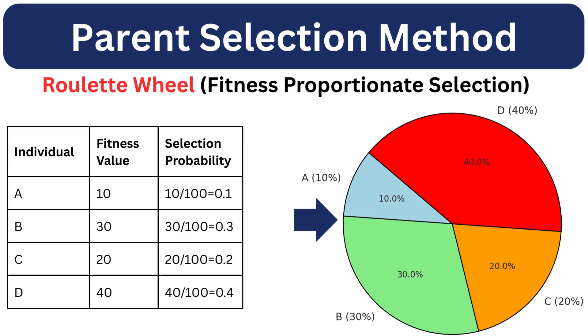Once we evaluate the fitness, the next question is which individuals get to become parents. This is called parent selection and it determines how solutions are chosen to pass on their genes. First up, the classic roulette wheel selection. Here individuals are selected proportionally to their fitness. It's like spinning a wheel where fitter individuals get larger slices. Here we have 4 individuals each with their fitness value. To calculate the selection probability, we divide the fitness value by the sum of all fitness values, which is 100. That means individual D with the highest fitness has the higher chance of being selected. But even A with low fitness still has a shot, just a smaller one.